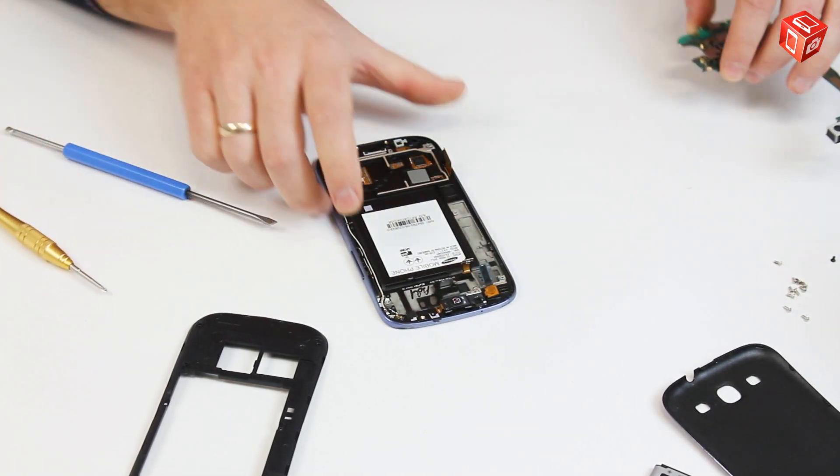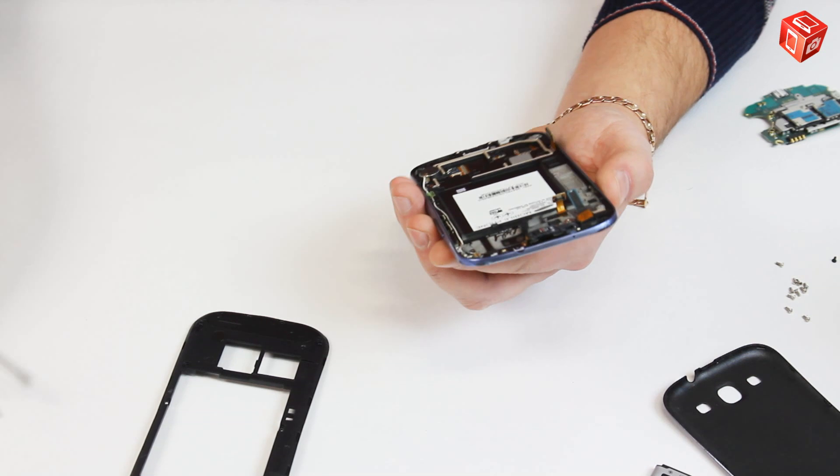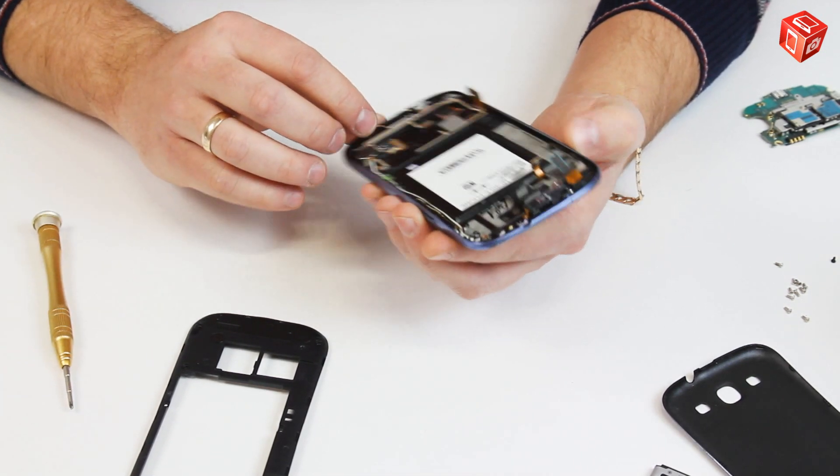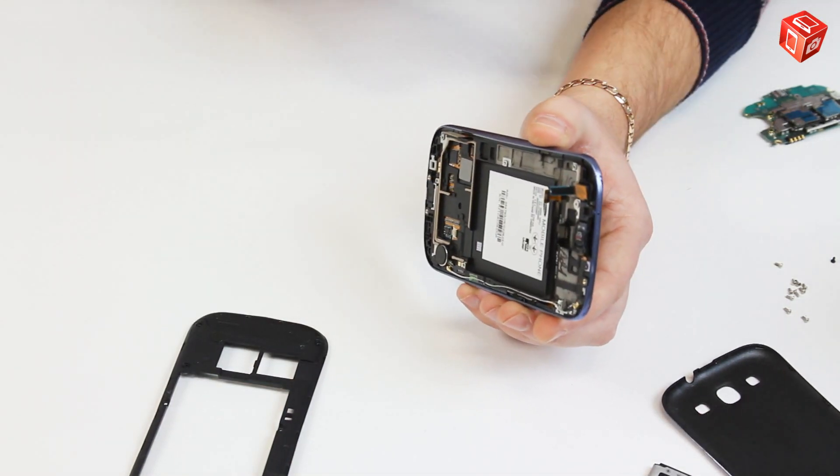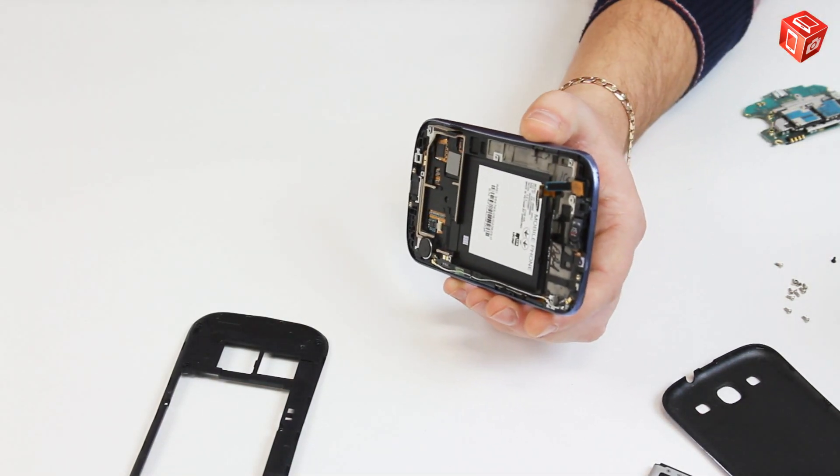Carefully disconnect the coaxial cable. The cell phone is now completely disassembled.